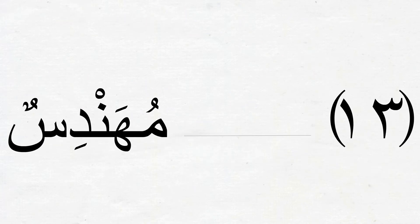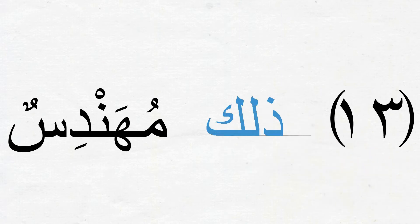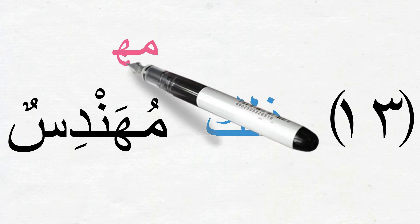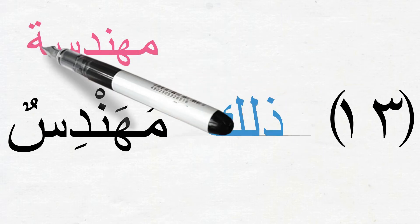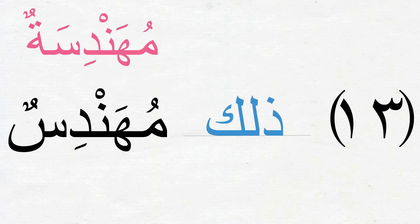Number 13: مُهَنْدِسٌ means 'an engineer'; it is مُذَكَّر, so we should write ذَٰلِكَ مُهَنْدِسٌ — that is an engineer. Can we convert مُهَنْدِسٌ to a مُؤَنَّث form? We add تاء مربوطة to the end, so a female engineer becomes مُهَنْدِسَةٌ. مُهَنْدِسٌ is a male engineer and مُهَنْدِسَةٌ is a female engineer.